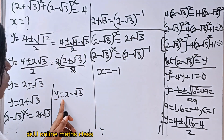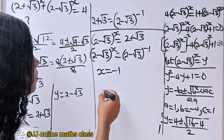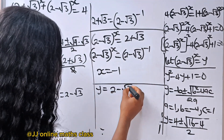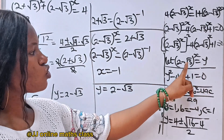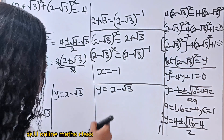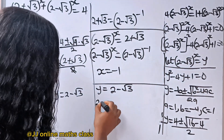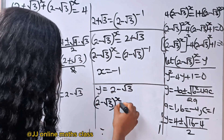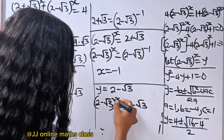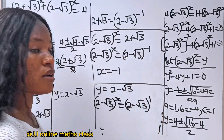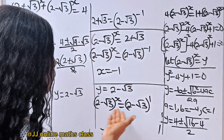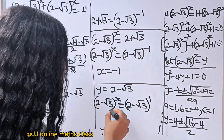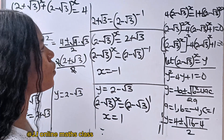For the second value, y is equal to 2 minus root 3. Recall that y is equal to 2 minus root 3 to the power of x. So we have 2 minus root 3 to the power of x equals 2 minus root 3, which is the same as 2 minus root 3 to the power of 1. Since the bases are equal, the powers are equal, meaning x is equal to 1.